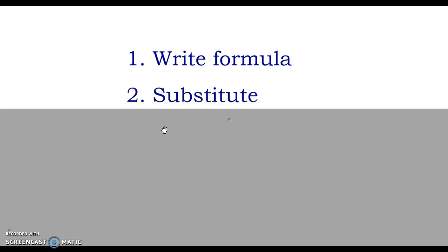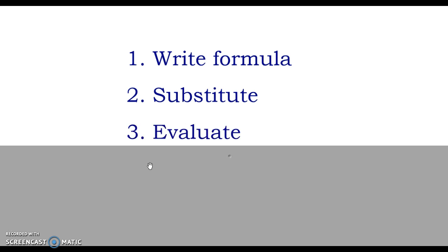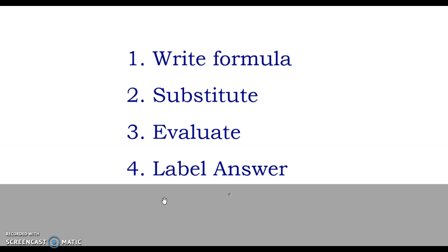Once you have your formula written down, you're going to show your substitution step. Show what you are replacing the variables with so that whoever is looking at your paper can see where you're getting your numbers from. Once you've substituted, you're going to evaluate following order of operations. And then finally, once you have your answer, you're going to label it. We want to be very precise in terms of labeling our answers and making sure we have the appropriate units.